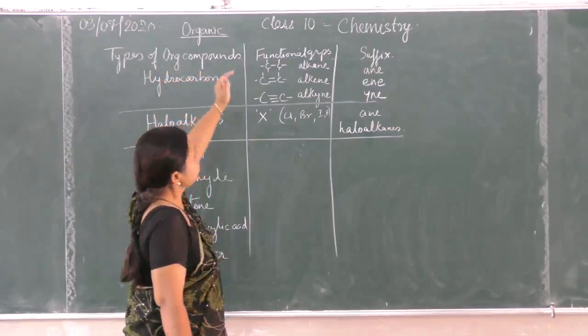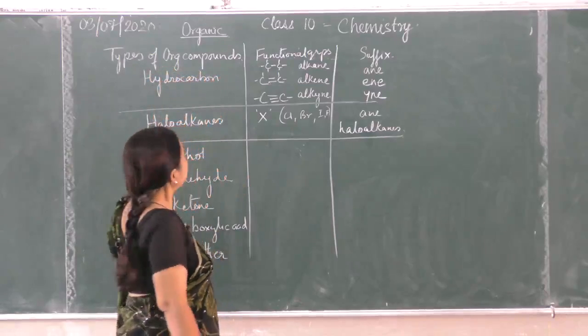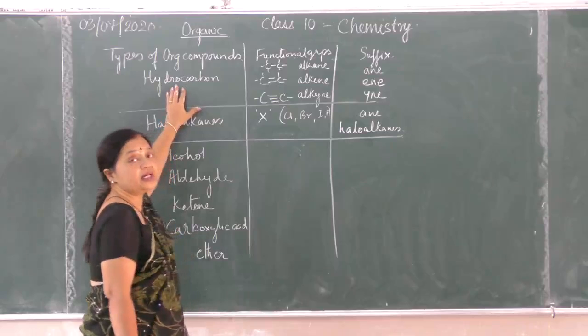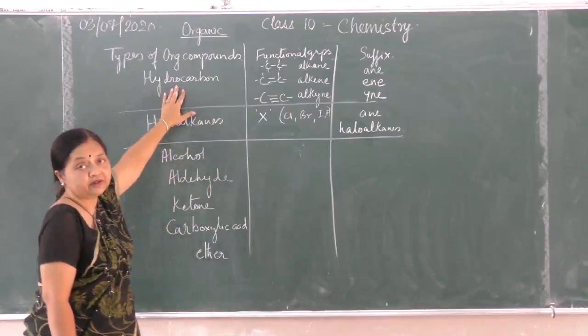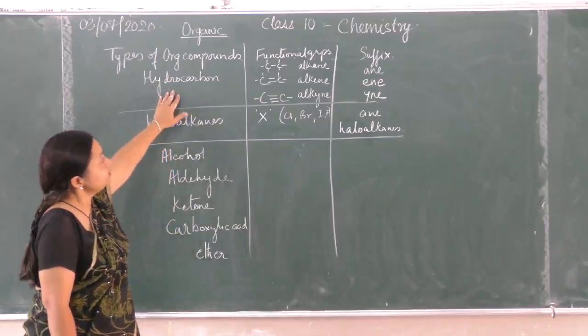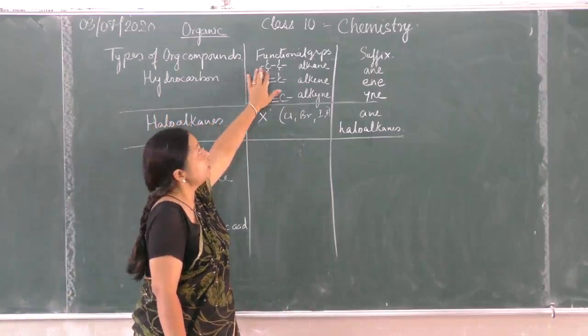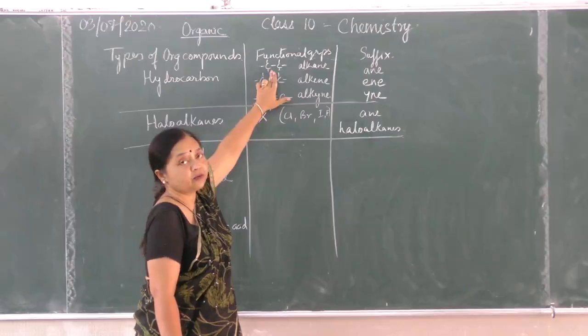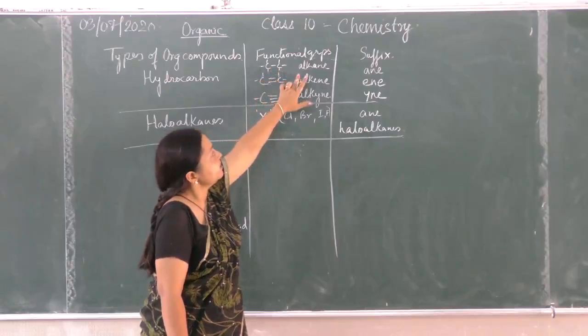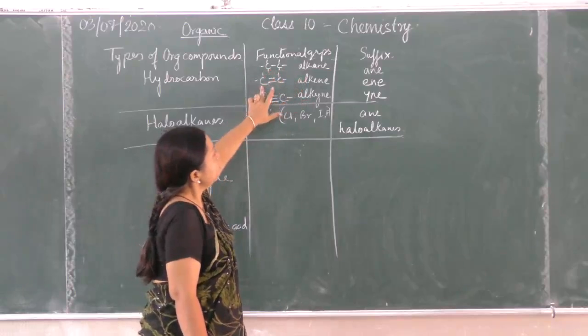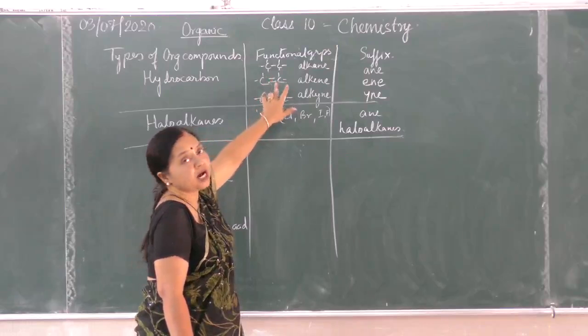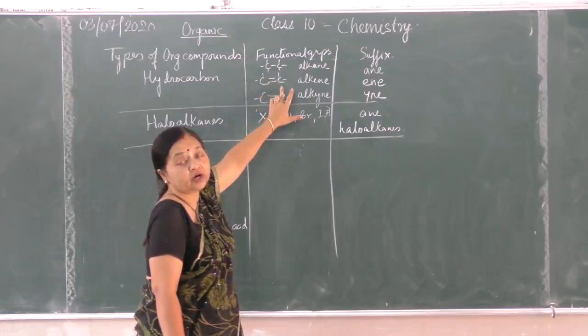Now we go into the types of organic compounds. Hydrocarbons contain only hydrogen and carbon, no other element is present. Hydrocarbons are three types: when two carbons are joined with a single covalent bond, it is called alkane, a saturated hydrocarbon. When any two carbon atoms in the chain are joined by a double bond, it is called alkene.